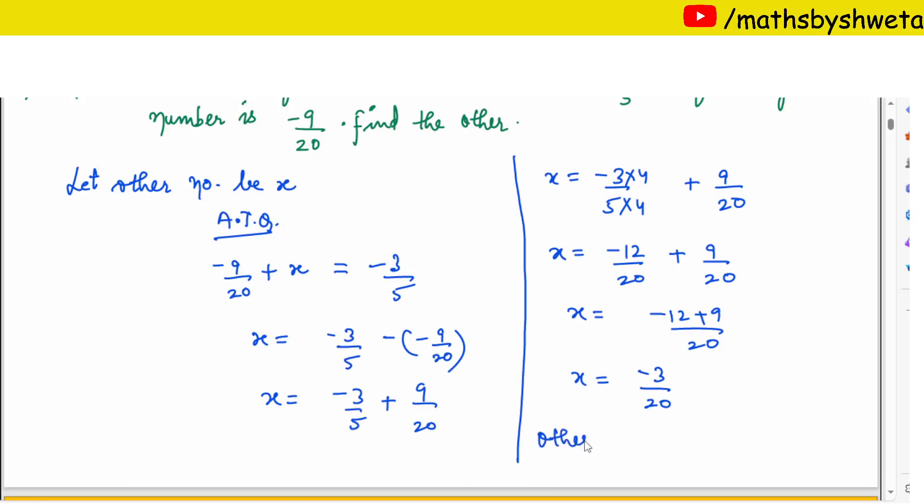Minus 3 upon 20 is your answer. You can tell other number which is your answer. Other number is minus 3 upon 20. This is your answer.